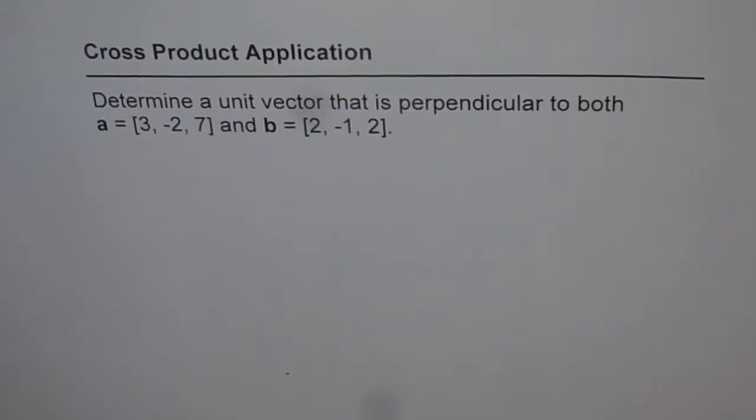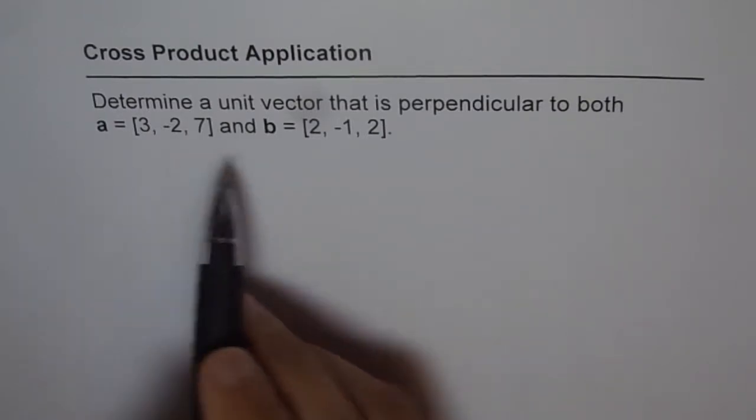Cross product application. Determine a unit vector that is perpendicular to both vector a = [3, -2, 7] and b = [2, -1, 2].